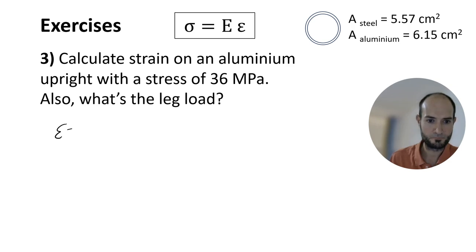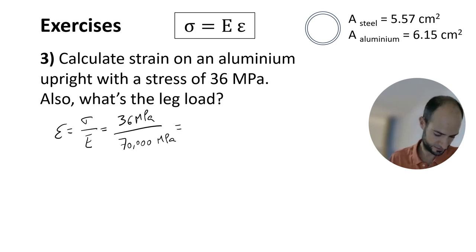Strain. As before, we have 36, and now it's 70,000. And that's 0.0005 or 0.51 per thousand. As expected.